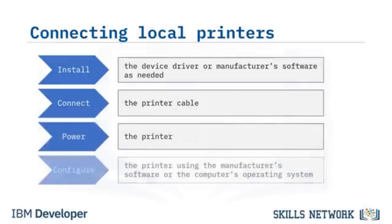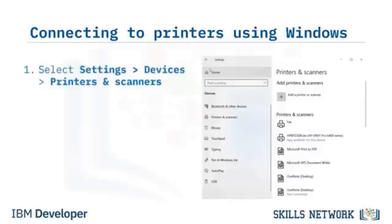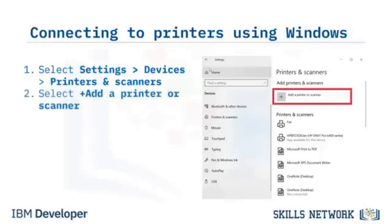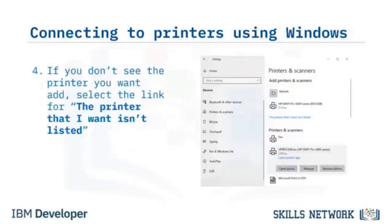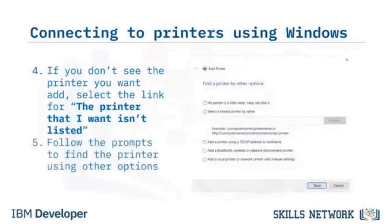Printer connections are available within the Settings app. Using the Settings app, select Devices, then Printers and Scanners, and select the plus Add a Printer or Scanner option. Windows often automatically detects connected printers. If the printer's software is installed, select Open Printer App to configure the printer. If you don't see the printer you want to add, select the link for 'The printer that I want isn't listed.' Follow the prompts to find a printer using other options including older printers, network printers, Bluetooth printers, or any printer needing a manual connection.